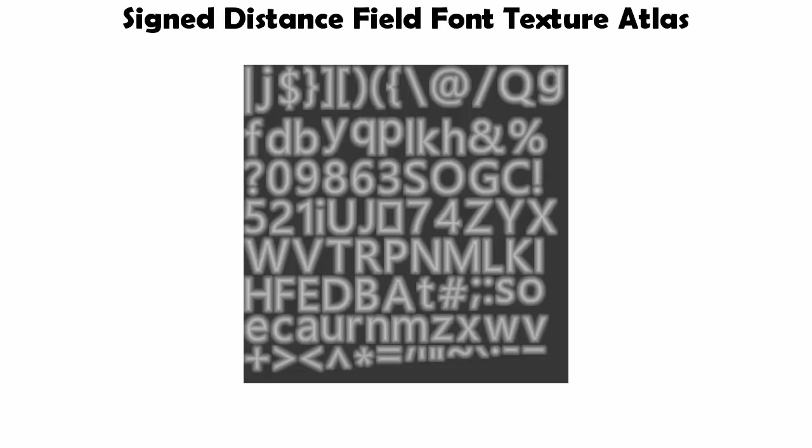The signed distance fields hold information about how far each pixel is from the centre of the character. You can see that the pixels in the centre of the character are much brighter, and as you go further away from the character the pixels become darker and darker. In the fragment shader we can access this distance information by simply sampling the texture atlas.